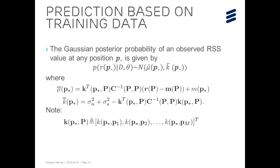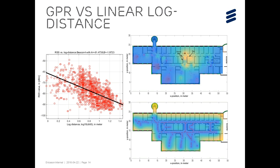Once we obtain the parameters for this Gaussian process regression model, we can estimate the mean and variance of the RSS value at a newly given position p star using the posterior distribution. So next, we will show some examples of Gaussian process regression models.